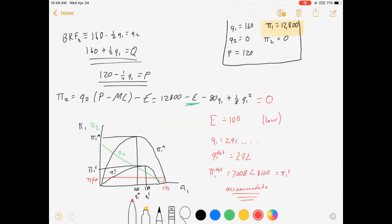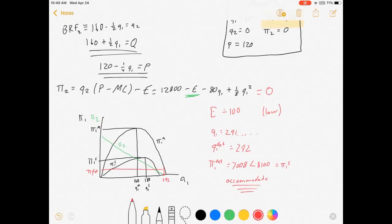And so my conclusion is accommodate entry. And by accommodate entry, I just mean play Stackelberg. We could push firm 2 out of the market. It's possible. We can make a positive profit while doing so, 7,008. But we'd be better off just to let them in the market and play Stackelberg. Let's do a different example.